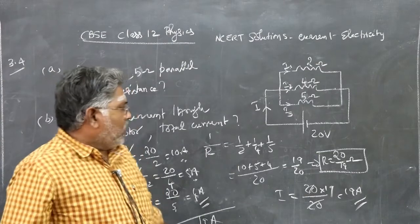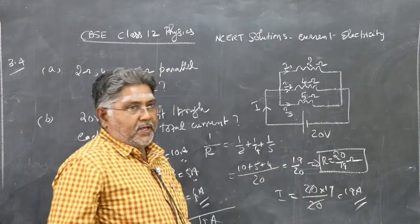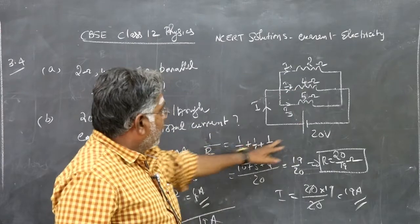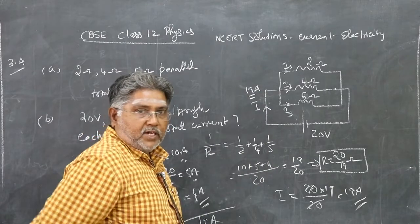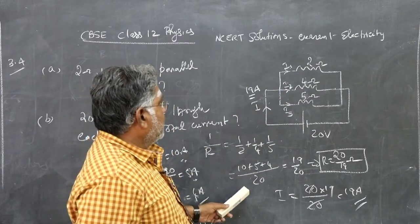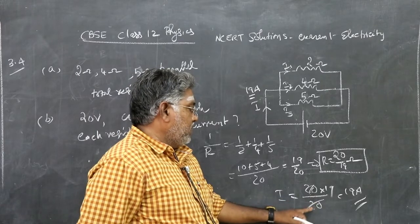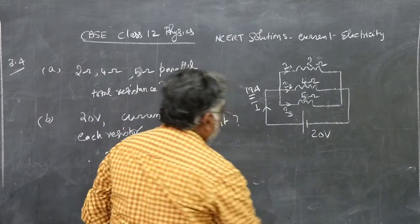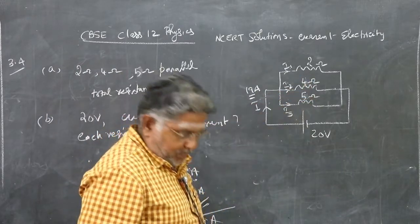There is another method as well. First find the effective resistance and compute total current drawn from the battery — which we found to be 19 ampere — using I = V/R_effective = 20 ÷ (20/19) = 19 ampere. This 19 ampere will then be distributed among the three branches.